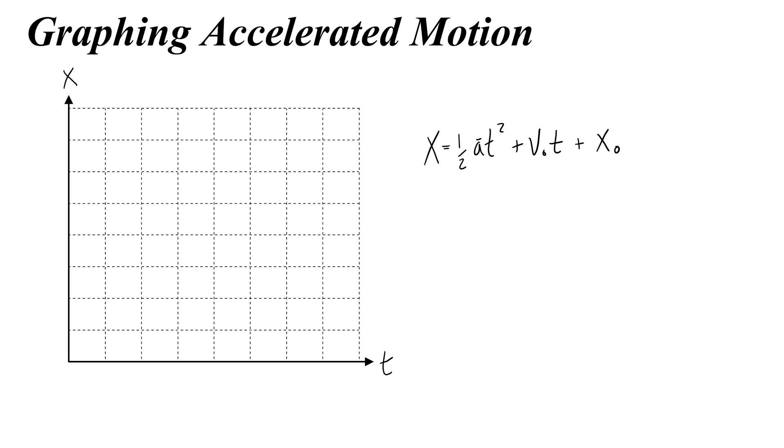You may have noticed that this equation with a t squared and a t in it looks a lot like a quadratic equation, and it is a quadratic equation. So let's write the more familiar quadratic form for ourselves with ax squared plus bx plus c.